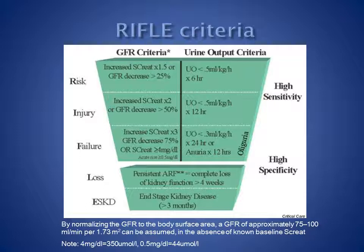RIFLE class F, or failure of kidney function, represents a GFR decrease of 75%. Serum creatinine is trebled, or urine output is less than 0.3 mL per kg per hour for 24 hours, or anuria is present for 12 hours.